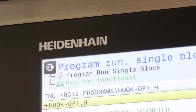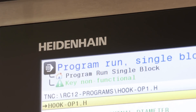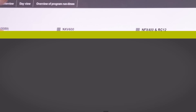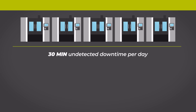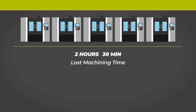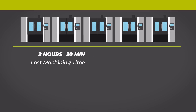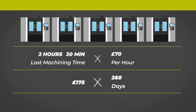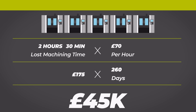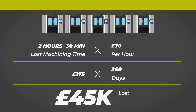One example: a company with five machines, each with 30 minutes of undetected downtime per day - that's a total of two and a half hours of lost machining time. If each machine runs at £70 per hour over 260 days, that's £45,000 in lost machining time.